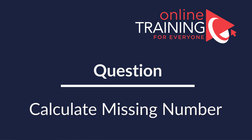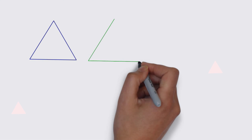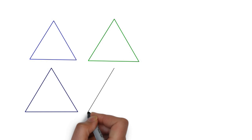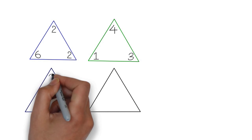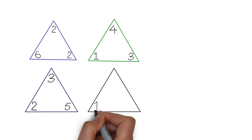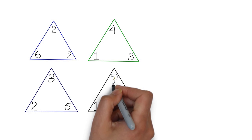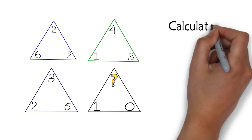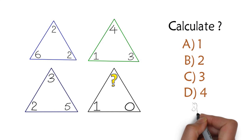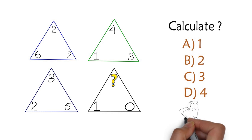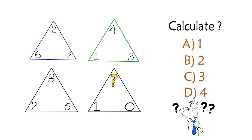Here's another puzzling question you might find difficult to solve. You are presented with four triangles. Each triangle has a number in the corner, and you need to calculate one of the missing numbers in the upper corner of the black triangle. You have four choices: A one, B two, C three, and D four. Can you determine the answer?